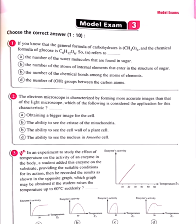Choose the correct answer: given that the general formula of carbohydrates is (CH₂O)n and the chemical formula of glucose is C₆H₁₂O₆, what does 'n' refer to? Options include: the number of water molecules found in sugar, the number of atoms of internal elements in the sugar structure, the number of chemical bonds among atoms, or the number of OH groups between carbon atoms.